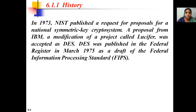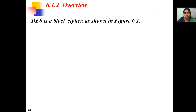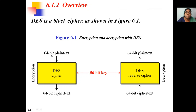In 1973, NIST published a request for proposals for symmetric key cryptosystems. A proposal from IBM — a modification of a project called Lucifer — was accepted as DES. DES was published in the Federal Register in March 1975 as a draft of federal information processing standards. In the DES block cipher, the block size is 64 bits and the key size is 56 bits, and when we encrypt plaintext we get 64 bits of ciphertext.